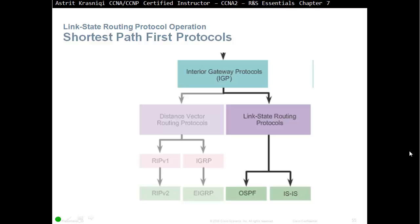Link state routing protocols work on the shortest path first. They add the bandwidth from the source to the destination, and after they run the calculation or algorithm, they find the best path to the destination and add that to the routing table. There are two routing protocols in link state: OSPF and ISIS.